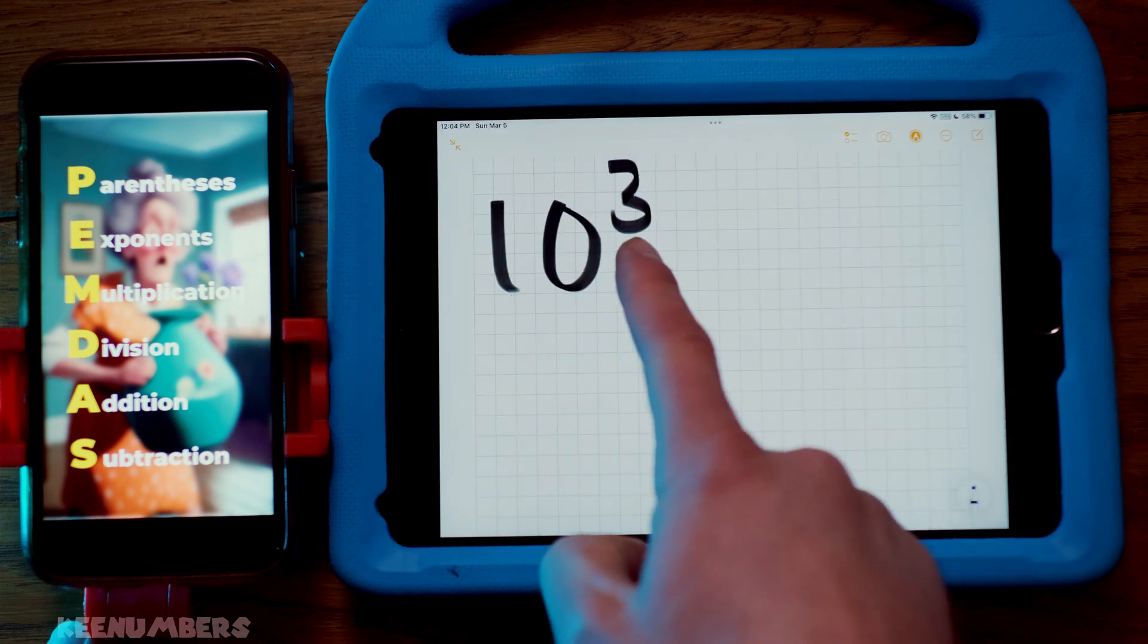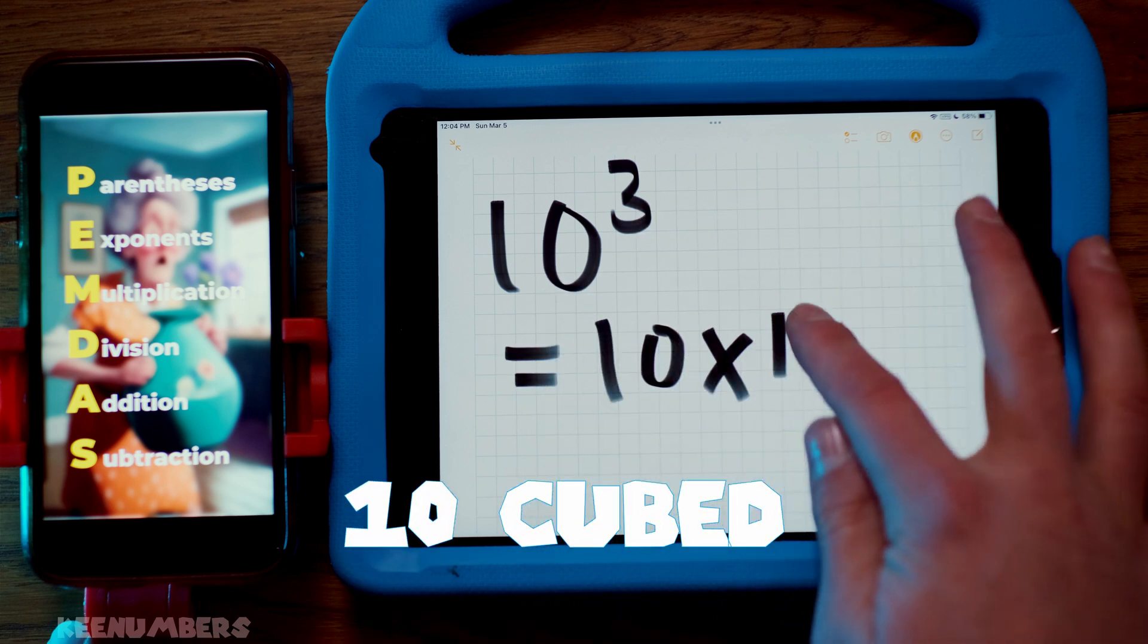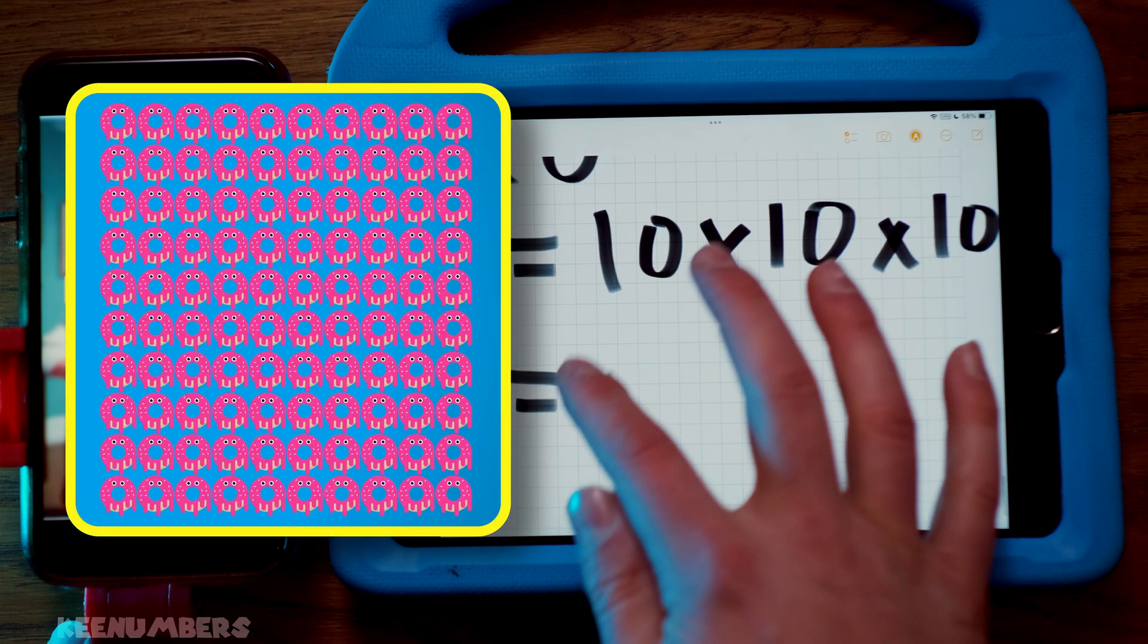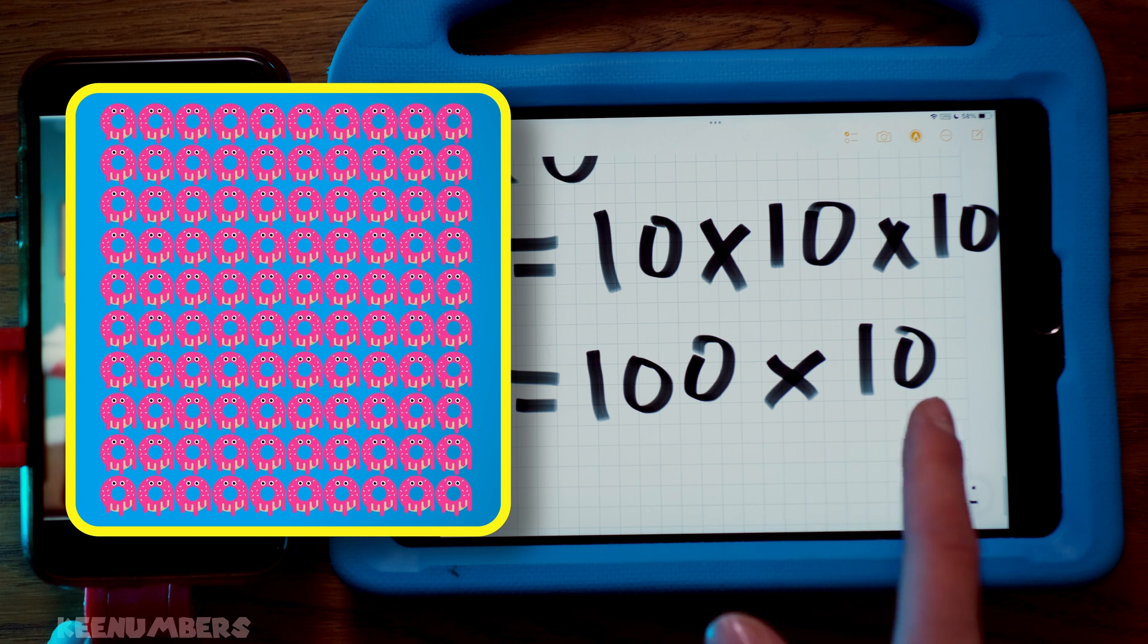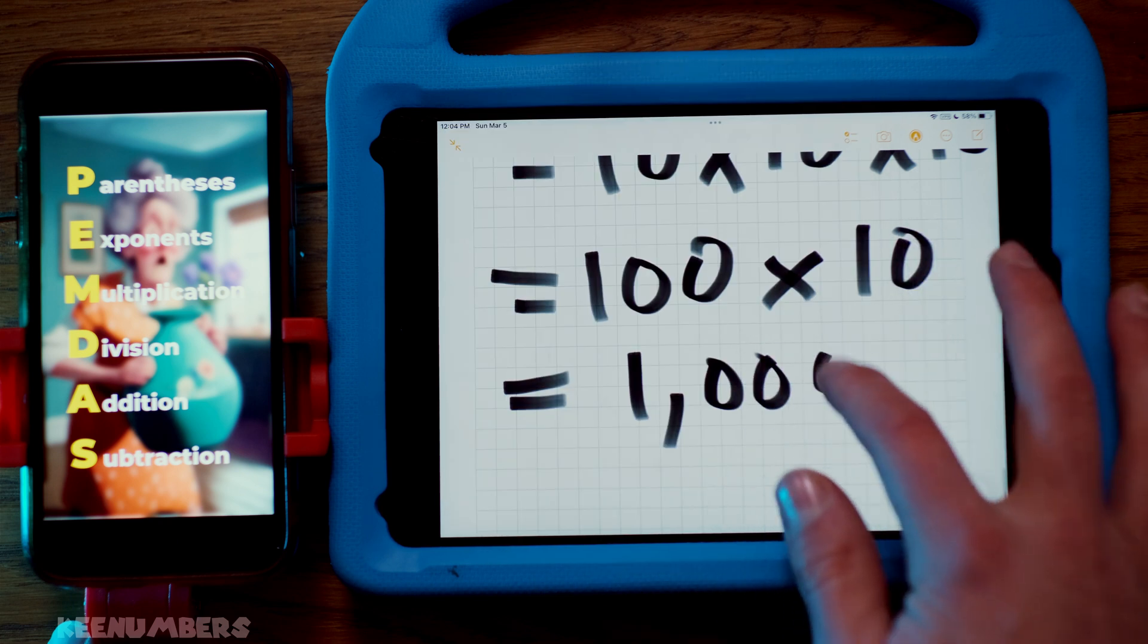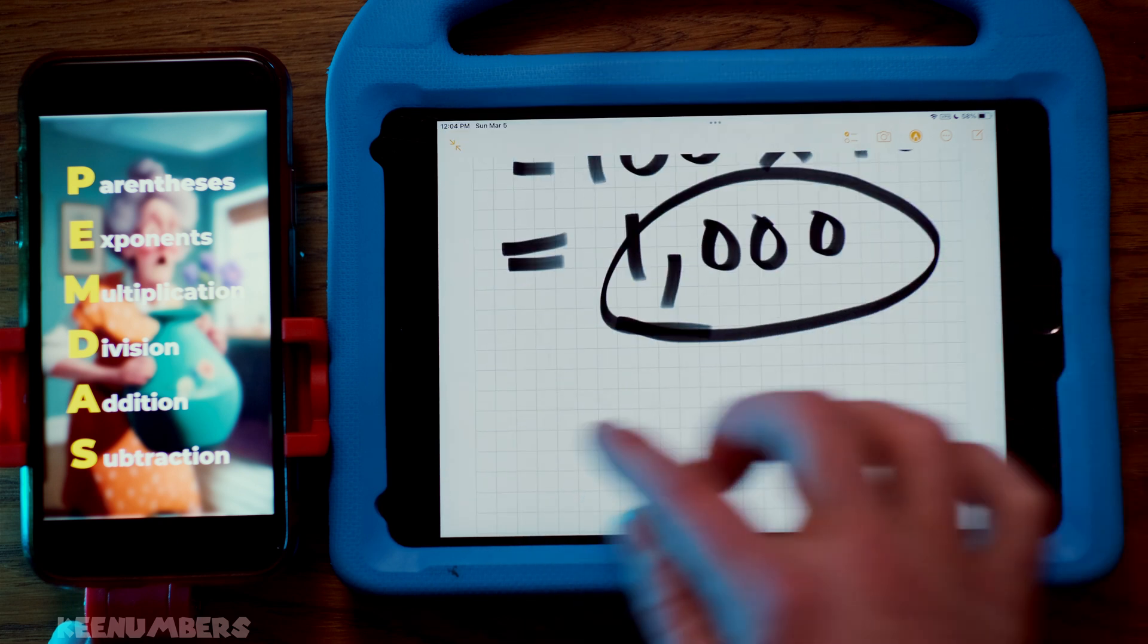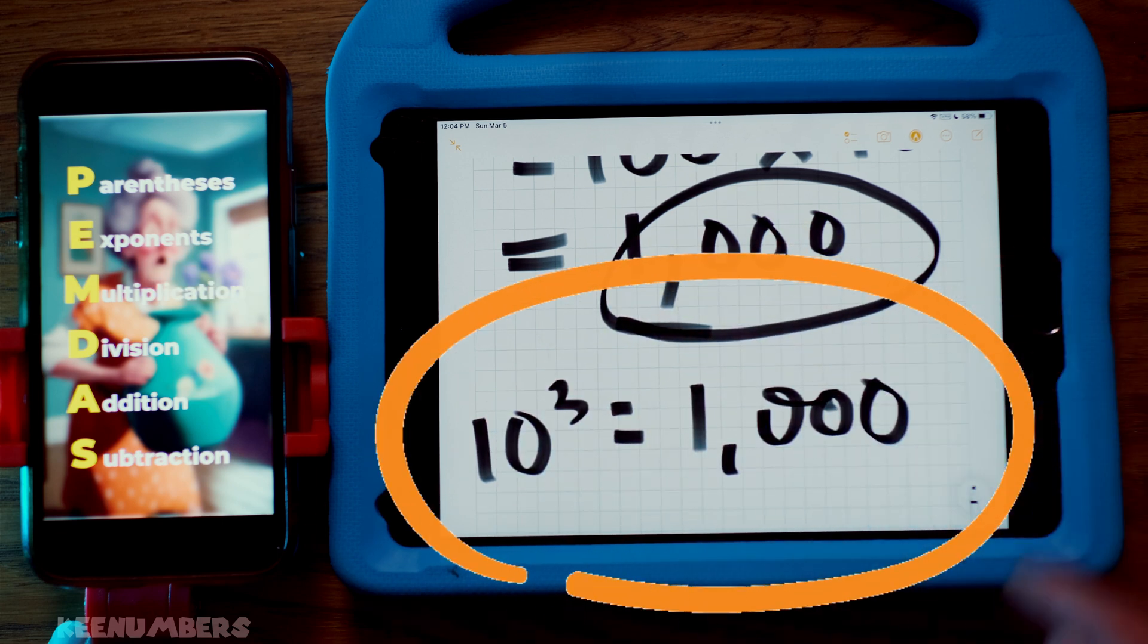10 cubed. Well, that's just 10 by 10 by 10. You know how to do that. 10 tens, that's 100. And when you multiply by another 10, you're asking for what is 10 one hundreds. Well, it's built into the name. It's 1,000. So 10 cubed is 1,000. 10 cubed equals 1,000. Yeah!